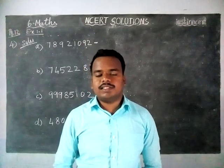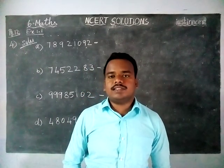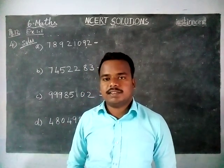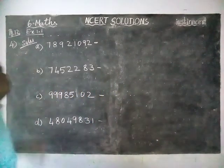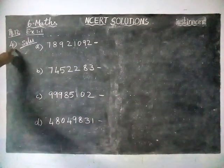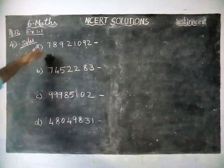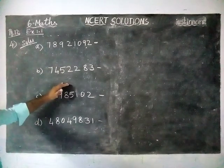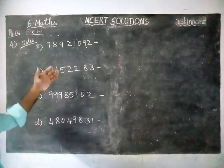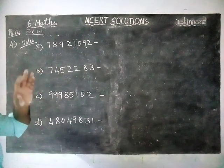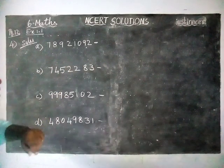Hi students, welcome to NCRT Solutions. Today we are going to see Class 6 Maths, Exercise 1.1, 4th question. Here they have given 4 numbers; these 4 numbers we have to use commas, then we have to write the number name in the International System of Numeration.